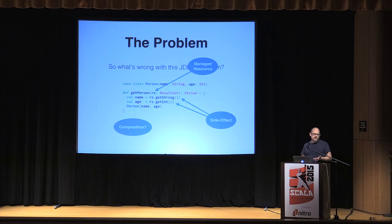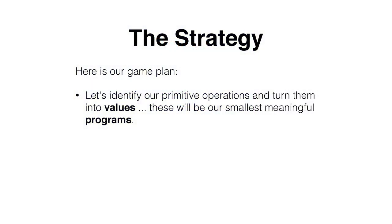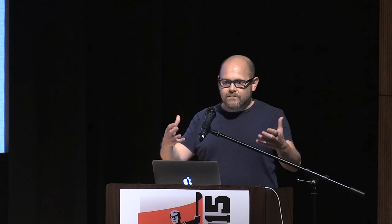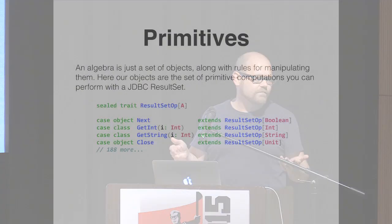You're just going to have to trust me for a few slides, and I think I can demonstrate that this is a useful thing to do. So here's our strategy: we're going to identify the primitive operations we care about and turn them into values — make a data type. These are going to be our smallest meaningful programs. Then we're going to make some rules for sticking them together to build bigger programs. Then we're going to build an interpreter that takes these programs, turns the crank, and connects to a database to actually do something useful.